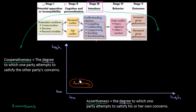Now let's think about competing. That should be quite simple. You are trying to really satisfy your own goals but you don't care about other parties. So we have low cooperativeness and at the same time high assertiveness. So somewhere here we would have competing.